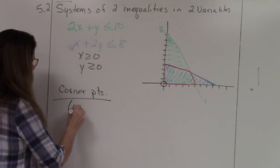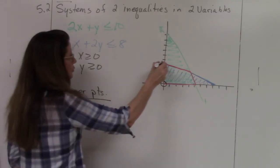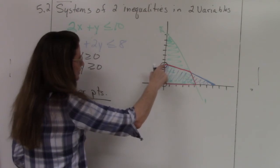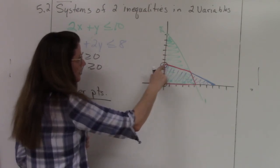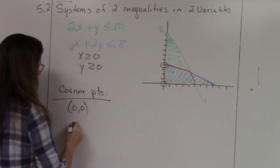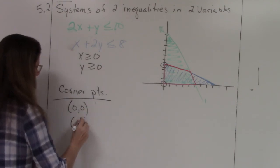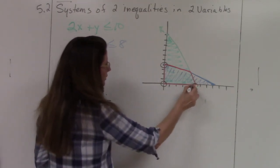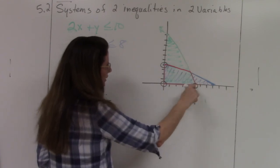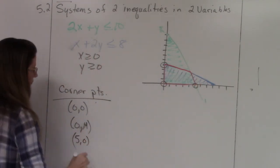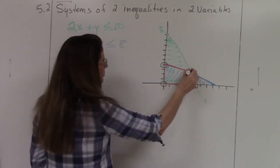The corner points of the feasible region are: (0, 0) — one corner point; (0, 4) on the blue line — another corner point; (5, 0) on the x-intercept of the green line — another corner point; and the point where the green and blue lines intersect — which we still need to find.